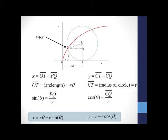Similarly, y equals CT minus CQ. CT is just the radius of our circle, which is r, and CQ over r is the cosine of theta. So substituting these values gives us that y equals r minus r cosine theta. This gives us a parametric set of equations which will generate our cycloid curve.